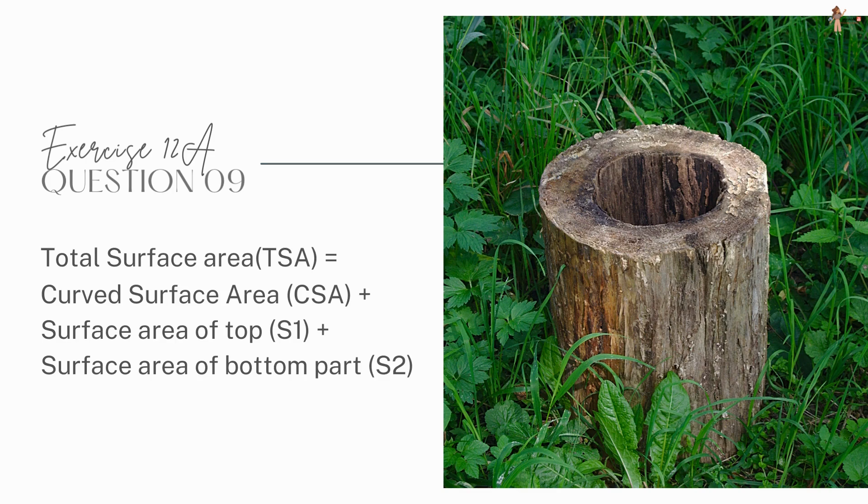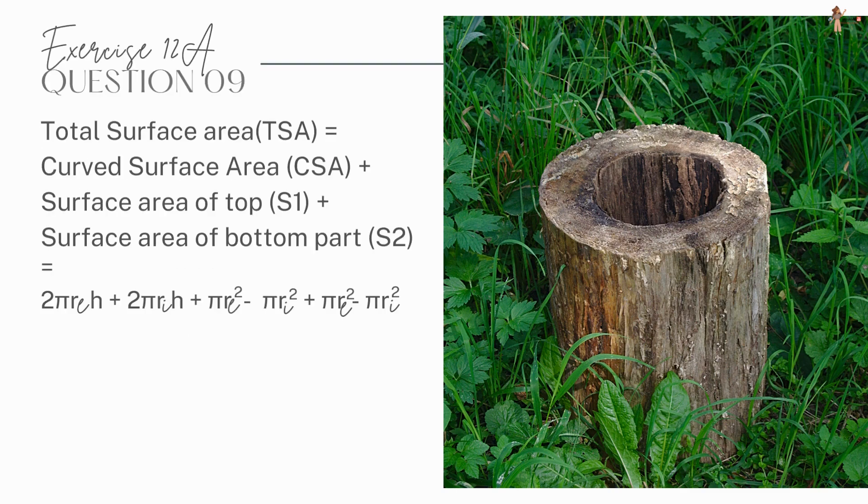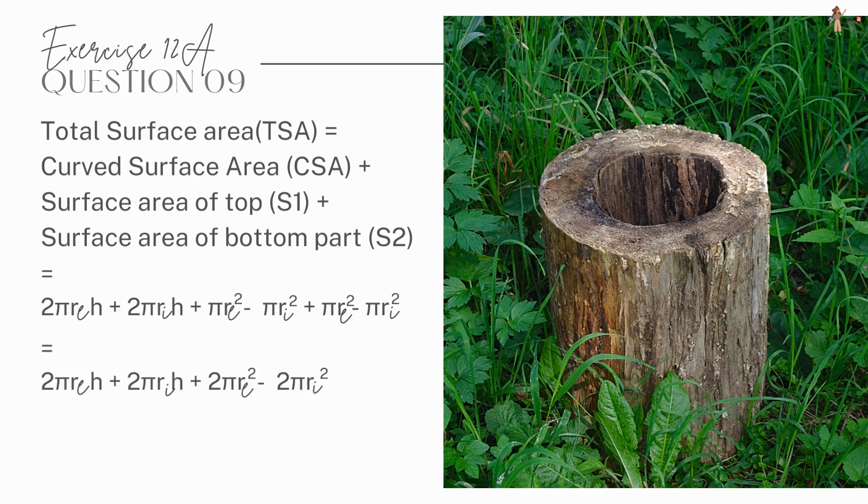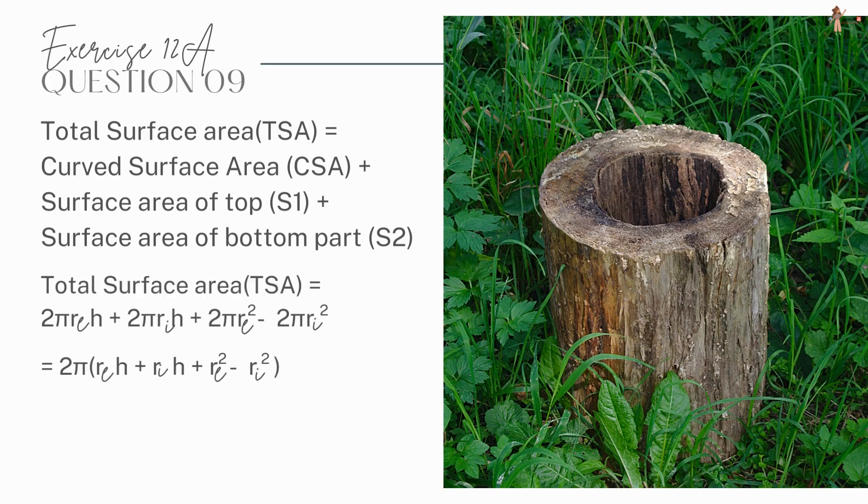Now don't rush to substitute the values. Simplify the equation first. Take 2π as common, and then we know that a² minus b² is equal to (a minus b) times (a plus b), right?